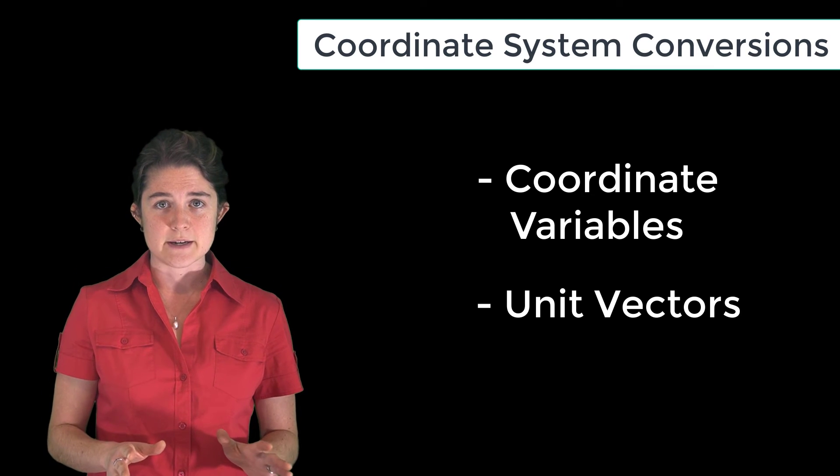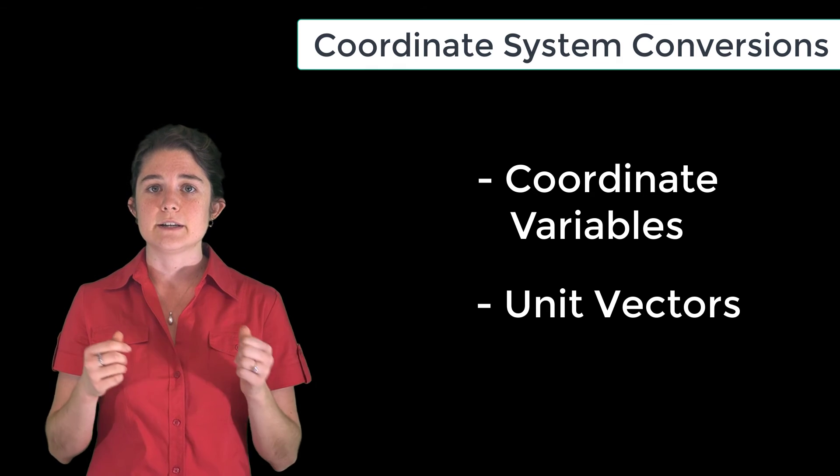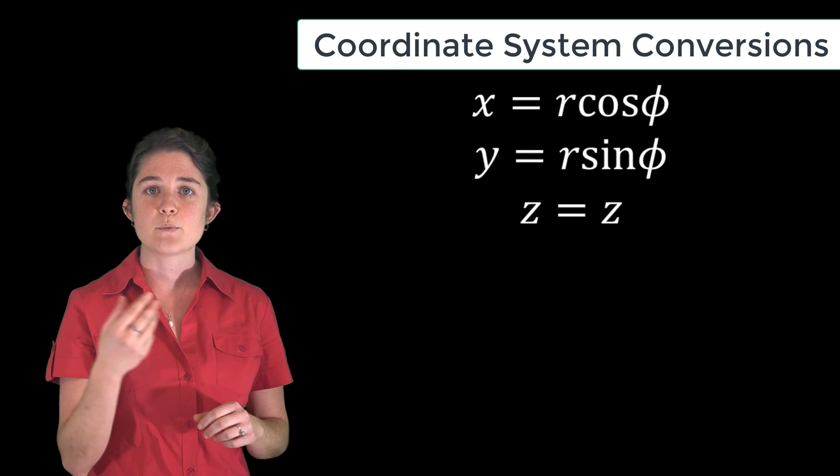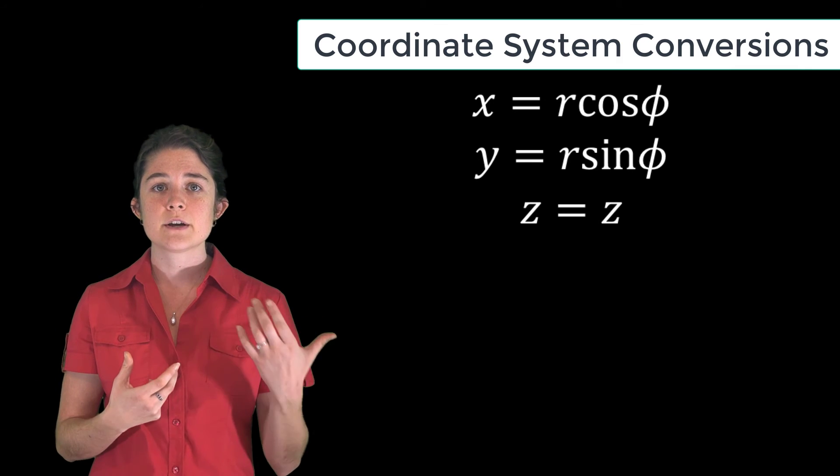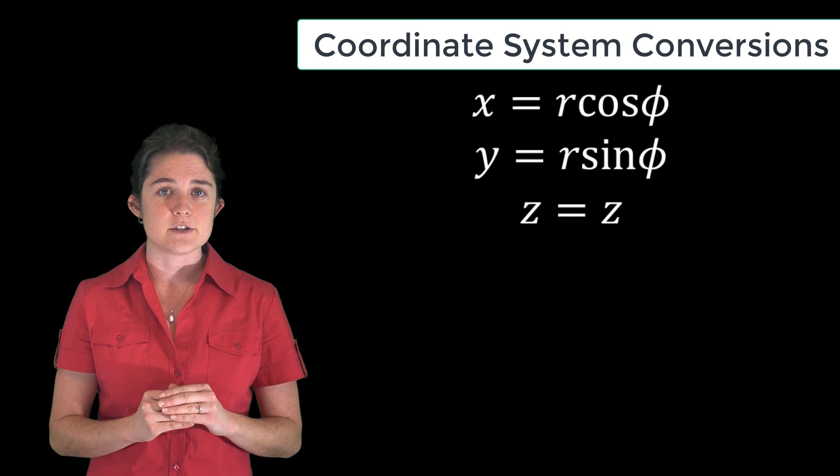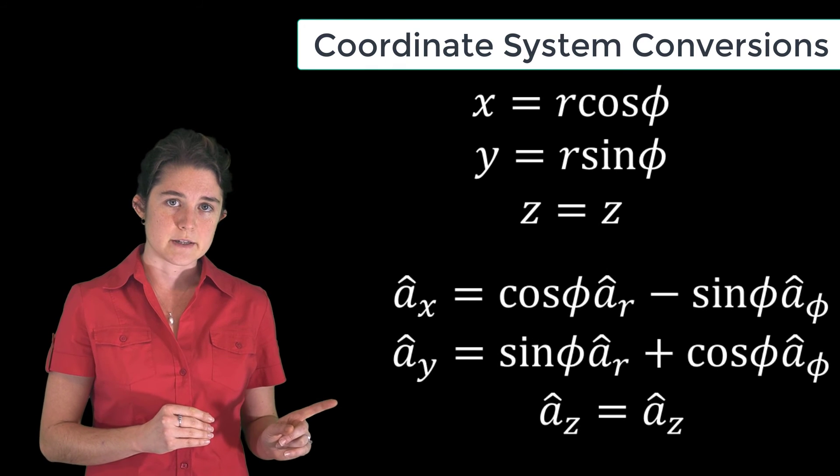If a vector is given in Cartesian space, the variables may be converted to cylindrical space using these conversion formulas. Simply swap out each of the Cartesian variables for their cylindrical equivalent. Similarly, each of the unit vectors may be converted according to these formulas.